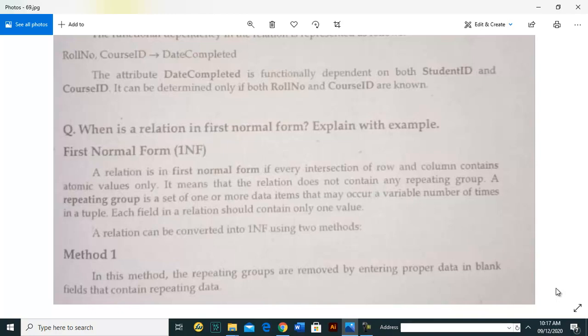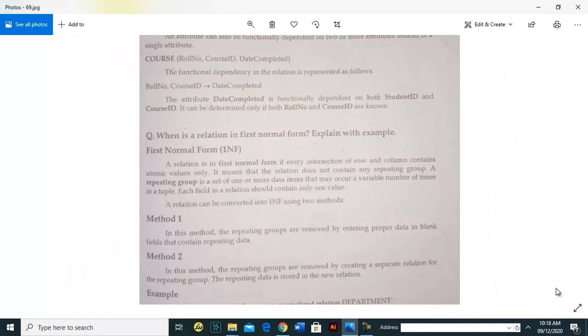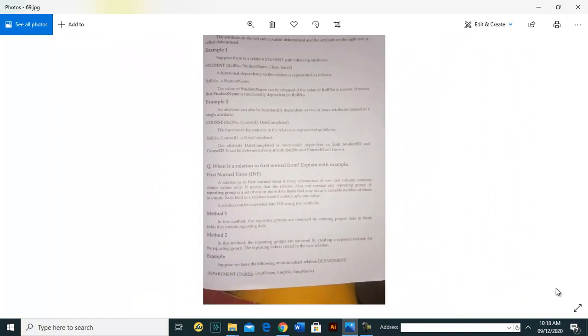It means that the relation does not contain any repeating groups. A repeating group is a set of one or more data items that may occur a variable number of times in the table. Each field in a relation should contain only one value. Then we can say that the table is in first normal form.